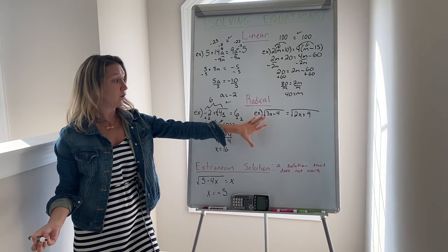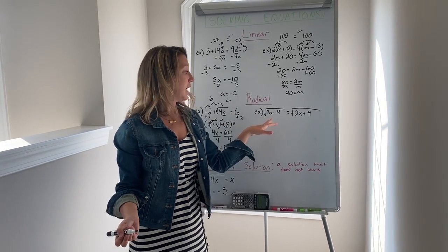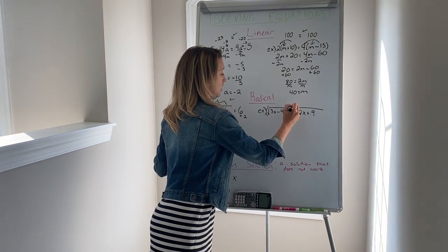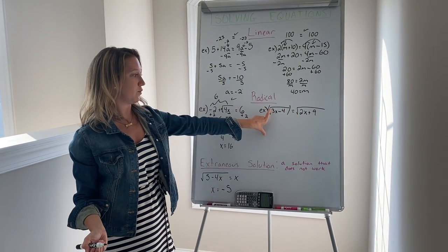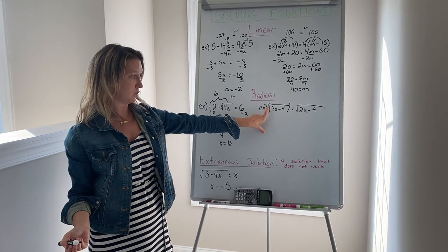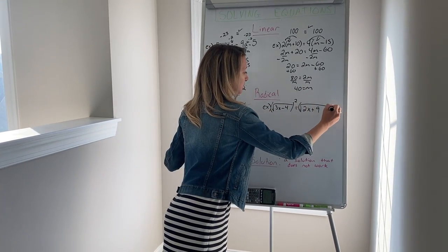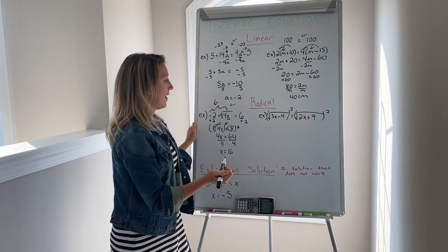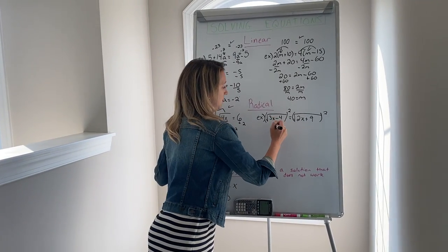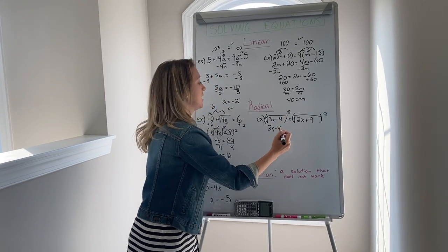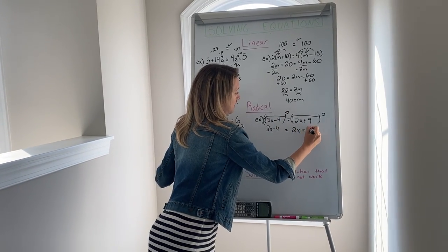Here's another example. Now here we have multiple radicals on both sides. Again, all you need to do to get rid of the radical is raise both sides to whatever power, whatever type of root you have. This is a square root because there's no number so it's automatically a 2. If I raise both sides to the second power and then solve, this would be 3x minus 4 because this cancels out with this, and this would be 2x plus 9.